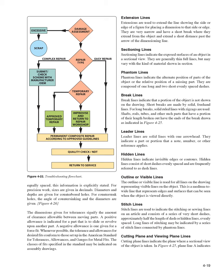For precision work, sizes are given in decimals. Diameters and depths are given for counterbore holes. For countersunk holes, the angle of countersinking and the diameters are given. The dimensions given for tolerances signify the amount of clearance allowable between moving parts. A positive allowance is indicated for a part that slides or revolves upon another part; a negative allowance is given for a force fit. Whenever possible, tolerance and allowances conform to those set up in the American Standard for Tolerances, Allowances, and Gauges for Metal Fits.